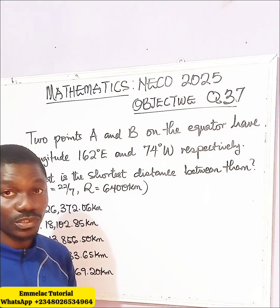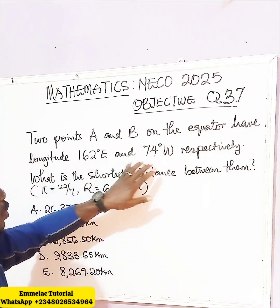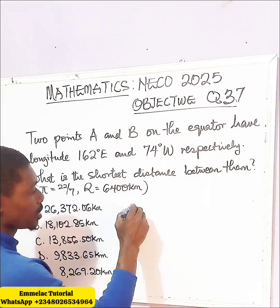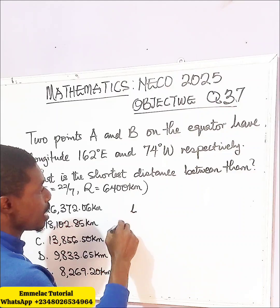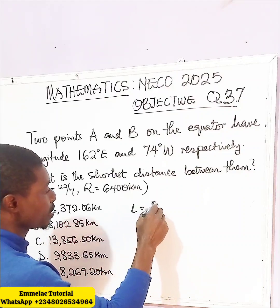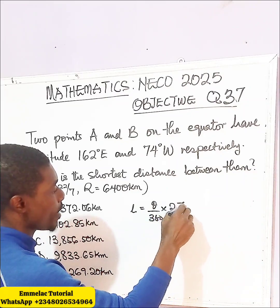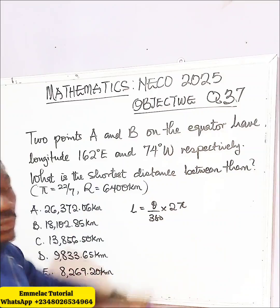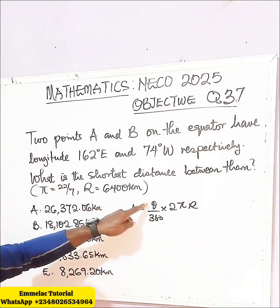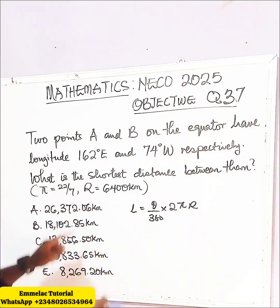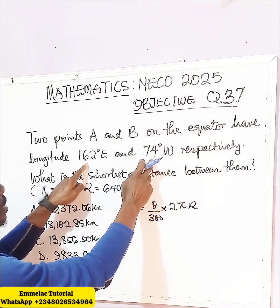Firstly, what we need to do is recall the formula for the shortest distance between two points. Let L be the shortest distance. Then L equals theta over 360, times 2 pi R, where R is the radius of the Earth. Our theta is the angle between the two points.